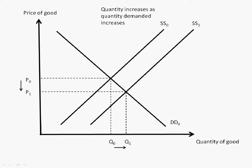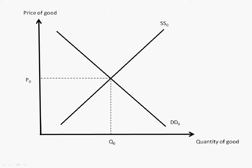When both the supply and demand of goods increase, the supply curve will shift to the right from SS0 to SS1 and the demand curve will shift to the right from DD0 to DD1.